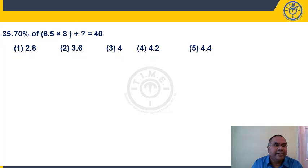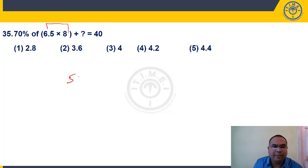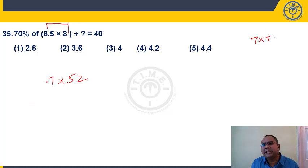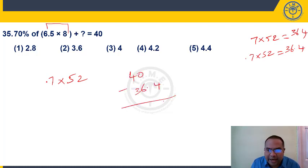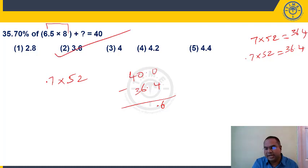Q34: Using BODMAS, simplify inside brackets first: 8 goes 2 times → then 25/2 × 72 = x × 45. Simplify: x = (25 × 36)/45 = 25×4/5 = 20. Answer: choice 2. Q35: 70% of (6.5×8 + x) = 40. 6.5×8 = 52. 0.7×52 = 36.4. 40 − 36.4 = 3.6. x = 3.6. Answer: 3.6.